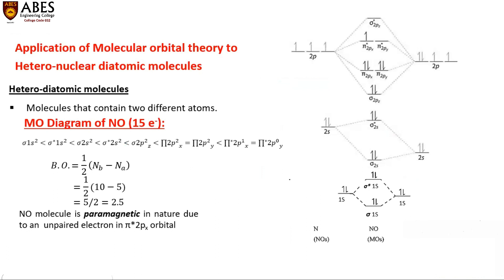Heteronuclear diatomic molecules are molecules that contain two different atoms. Examples of heteronuclear diatomic molecules are CO, NO, HF, HCl, and HBr. First we will discuss the NO molecule, which contains 15 electrons.